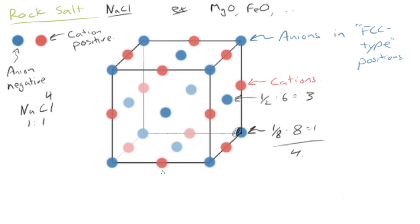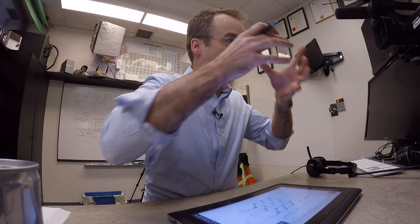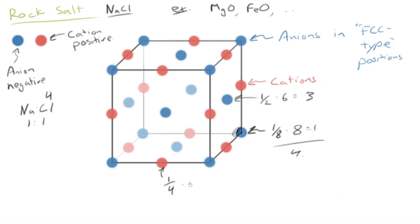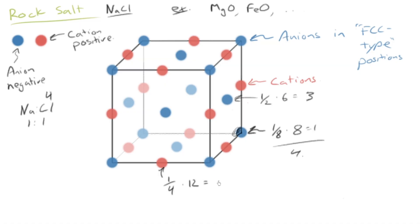So we need to have four cations. And if you take a look here, you'll see that we have one quarter on each edge position, right? But how many are there? How many edges are there? There's four edges on the bottom, four edges on the top, and four holding the whole thing together. So that means 12. There's 12 edges. So there's only three cations. We're missing one.